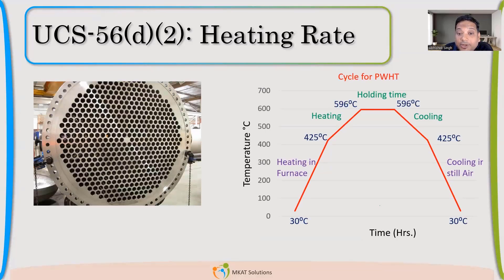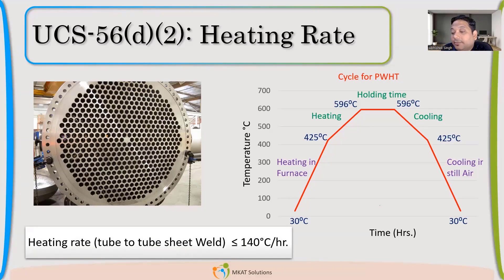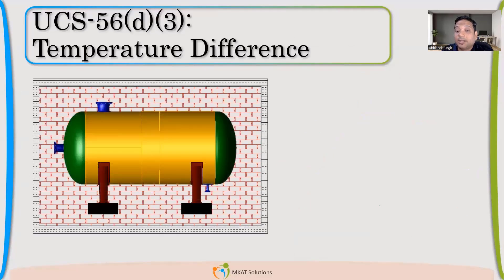There is also a heating rate requirement for tube-to-tube sheet joints, which was recently added in the 2021 edition and was not present in 2019. For tube-to-tube sheet welds, you have to maintain a heating rate of less than 140 degrees Celsius per hour. Note that thickness is not a factor here — the limit is simply 140°C per hour maximum, so you have to heat more slowly than for other jobs.